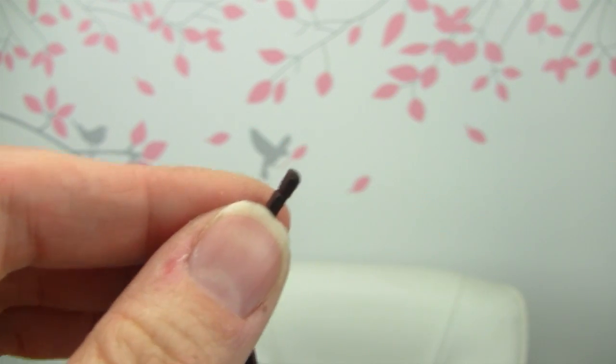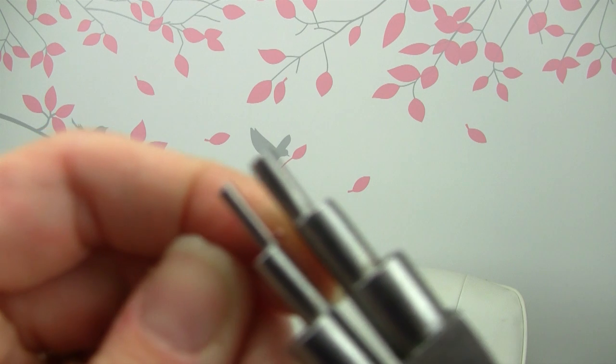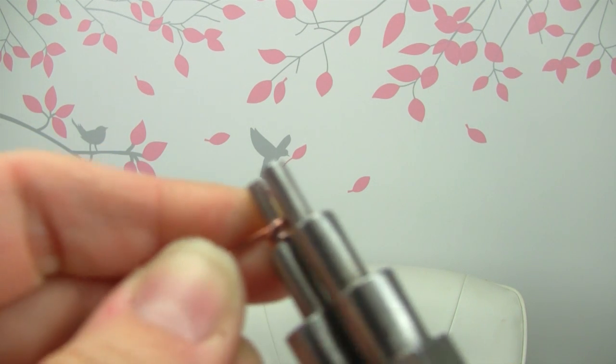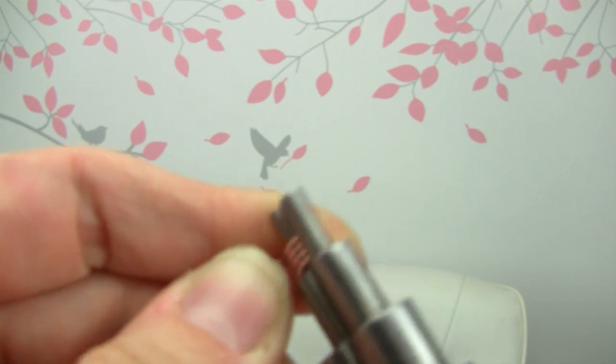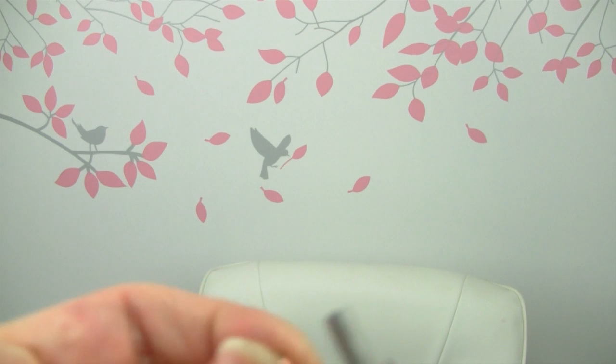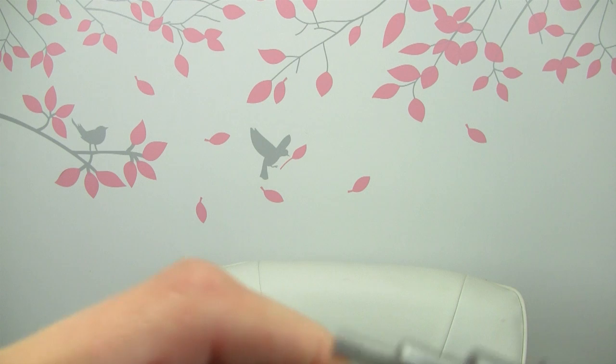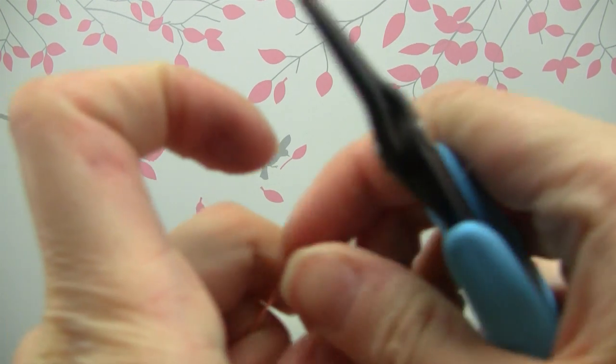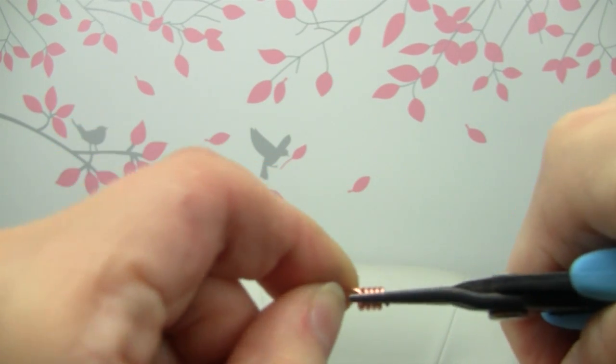And now we're going to do the same thing for this other end except instead of a little loop, we're just going to make our hook. So I'm just going to do this a few times. And I'm going to do the hammering off camera. But I am going to hammer the hook just to make sure that it's nice and strong for me.